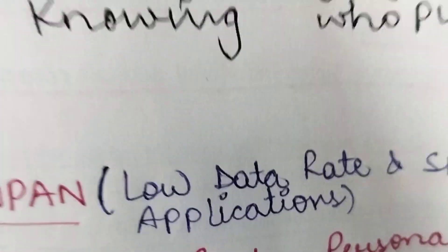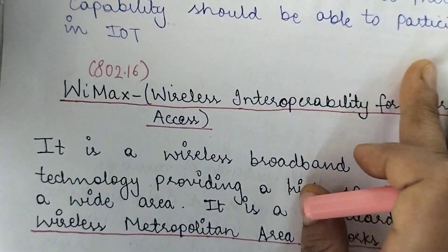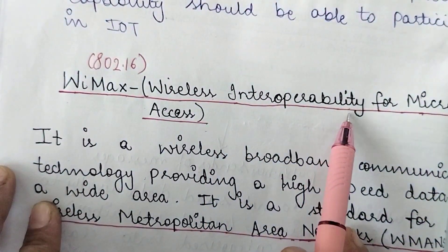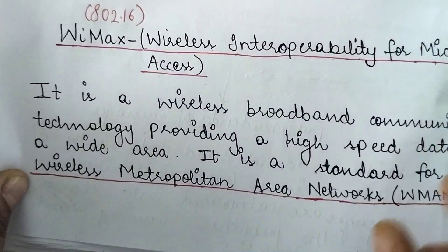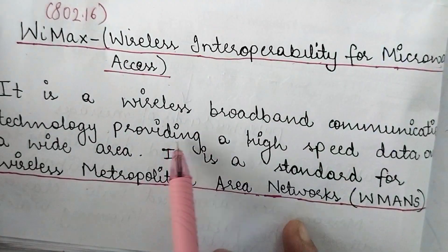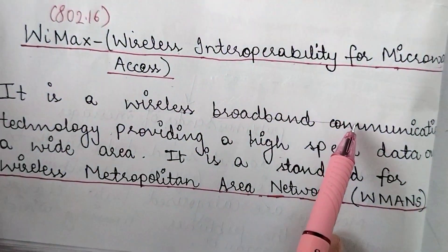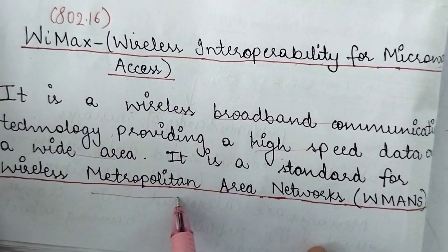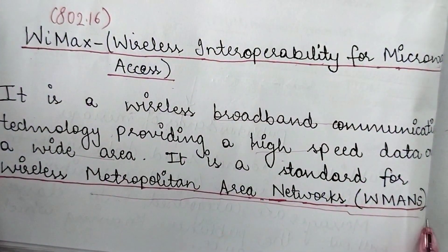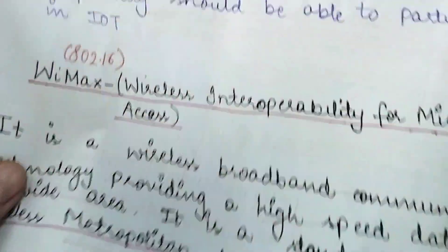Another standard used in the link layer is WiMAX. The full form of WiMAX is Wireless Interoperability for Microwave Access. It is a wireless broadband communication technology providing high speed data over a wide area. Basically, it is a standard or protocol used for wireless metropolitan area networks.